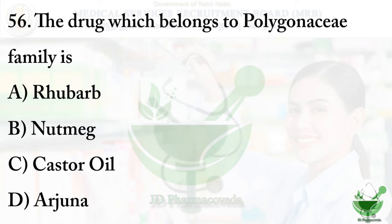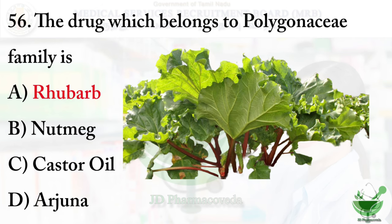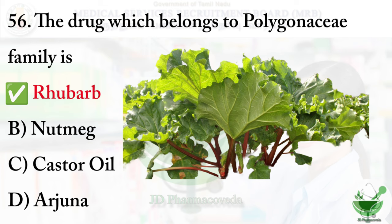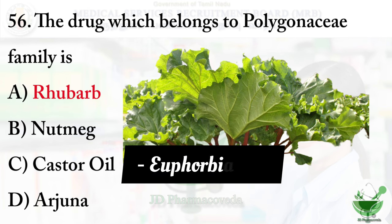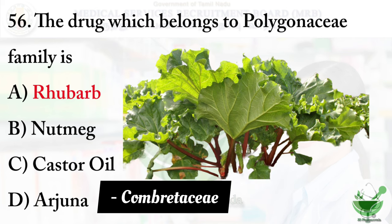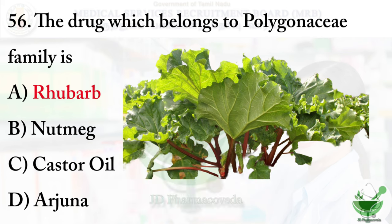Question number 56: The following drug which belongs to the Polygonaceae family is — option A, Rhubarb; option B, Nutmeg; option C, Castor oil; and option D, Arjuna. The right option is option A, Rhubarb. The other options: Nutmeg's family is Myristicaceae; Castor oil belongs to Euphorbiaceae; and Arjuna belongs to Combretaceae, with the botanical name Terminalia arjuna.